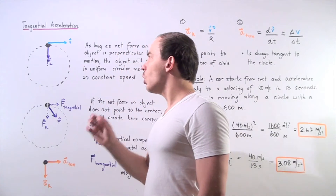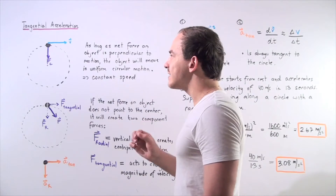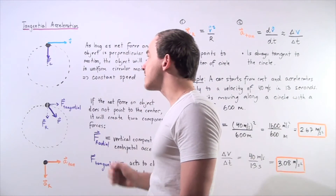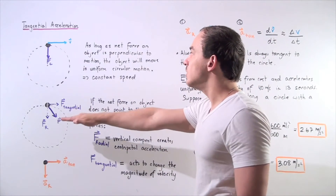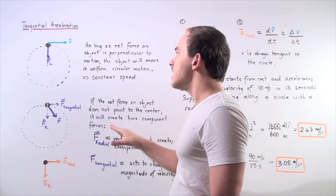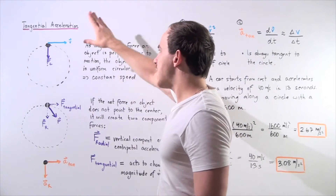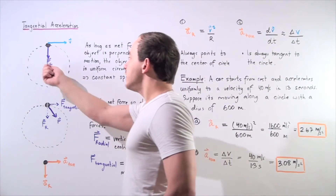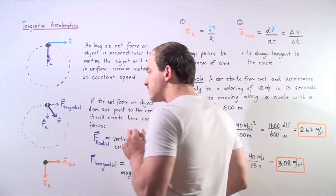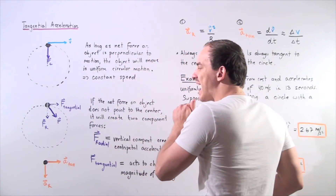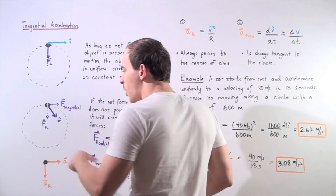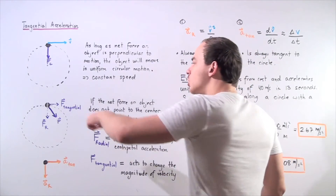Now let's suppose the net force no longer acts at a 90-degree angle — suppose it acts at an angle less than 90 degrees. Before, the net force on the object was along the y-axis, so there was no net force acting along the x-axis. That's exactly why the magnitude of velocity remained constant — we did not have a net force acting in the same direction as our velocity vector. When the net force acts at an angle, it creates two component vectors: one known as the tangential force, which runs along the same axis as the velocity vector, and a second component called the radial force that runs along the y-axis.